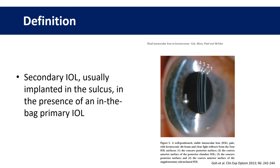So what exactly is a piggyback lens? In this context it's a secondary intraocular lens, usually implanted in the sulcus in the presence of an in-the-bag primary intraocular lens. You can see an example of a piggyback lens in situ in this image to the right.